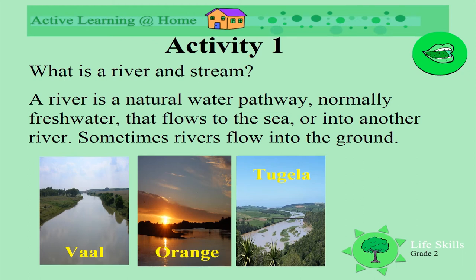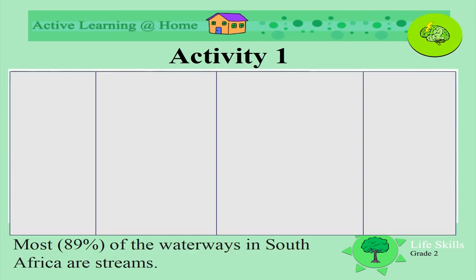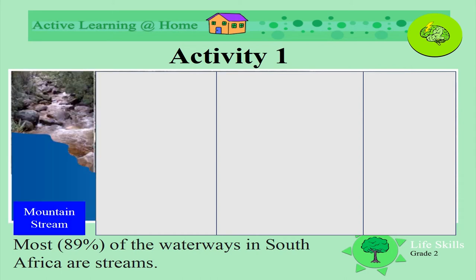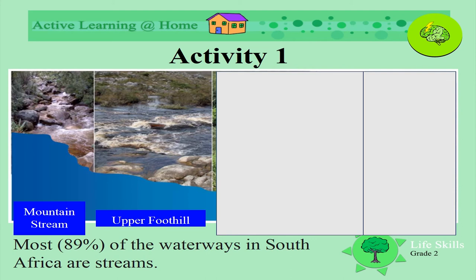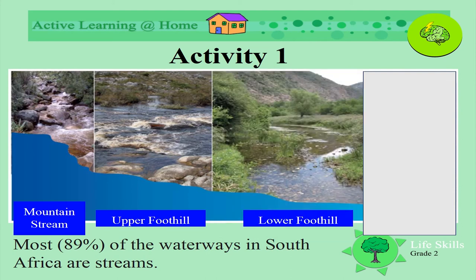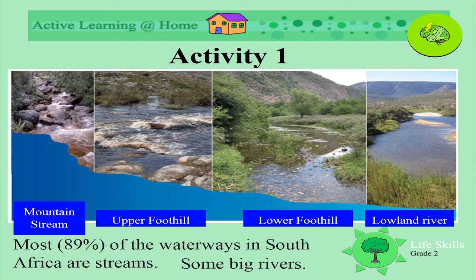Can you think of any other rivers in South Africa that you might know? Most of the waterways in South Africa are really streams — they may be mountain streams, upper foothill streams, lower foothill streams, or lowland rivers.